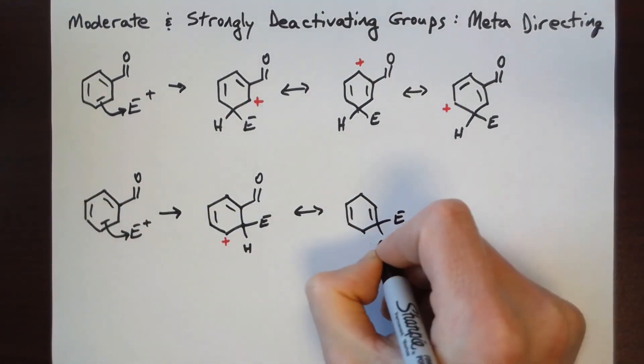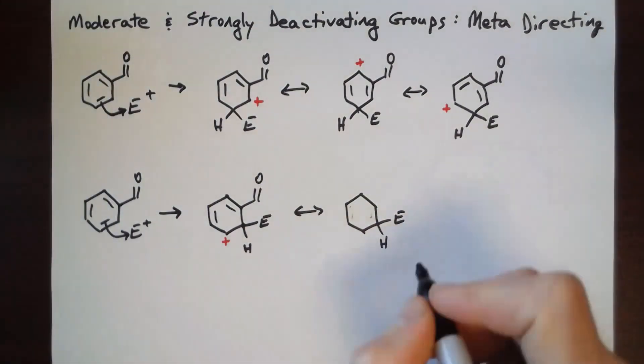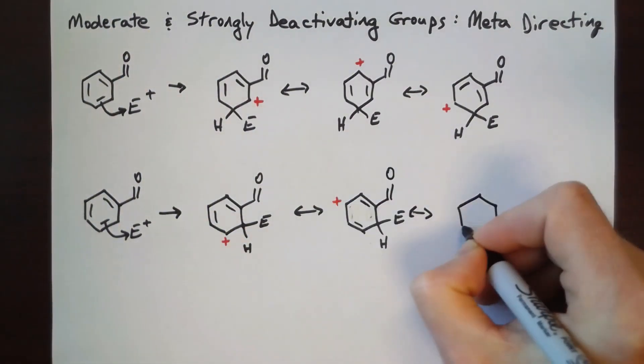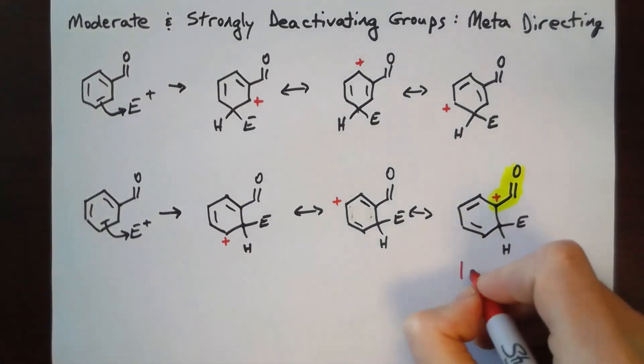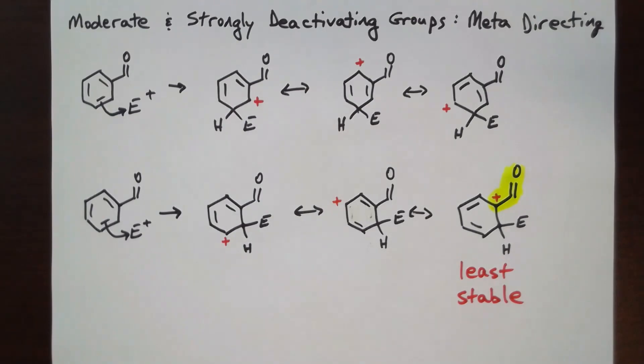If, however, the electrophile adds in the ortho- or para-positions, then the positive charge is shared among the three carbons, one of which is bonded to the electron-withdrawing carbonyl group. Remember, the carbonyl carbon is already partially positively charged, so it is less stable to put the positive charge of the intermediate on the adjacent ring carbon.